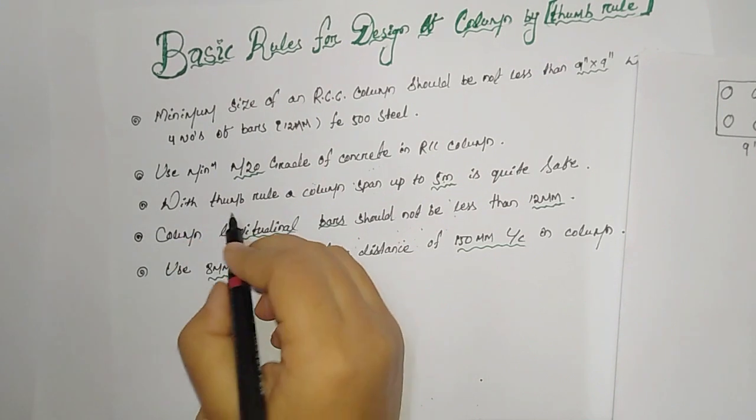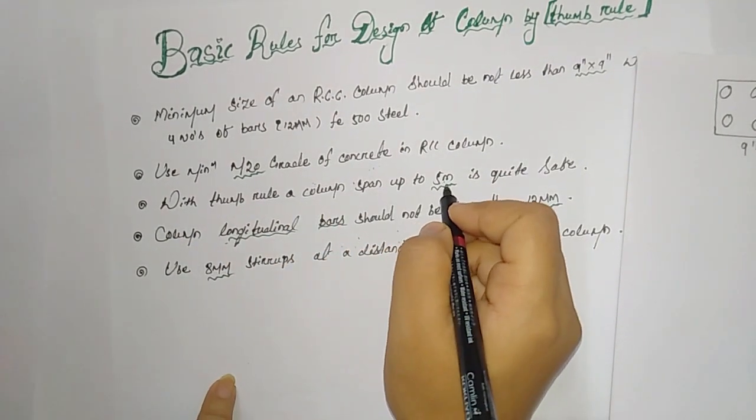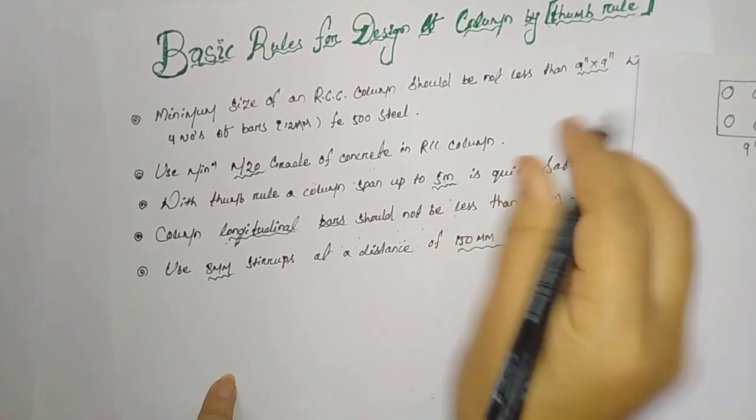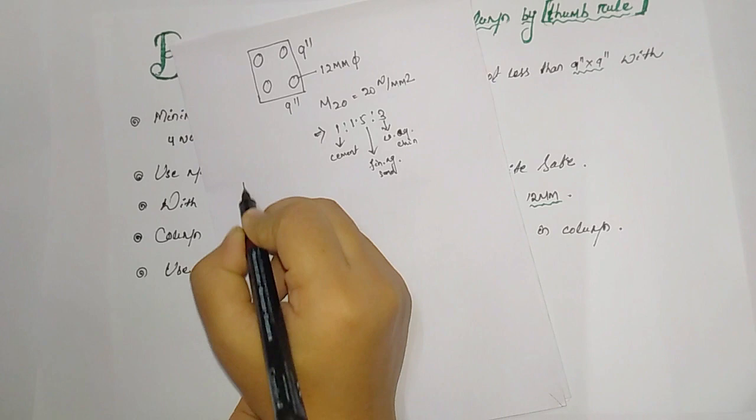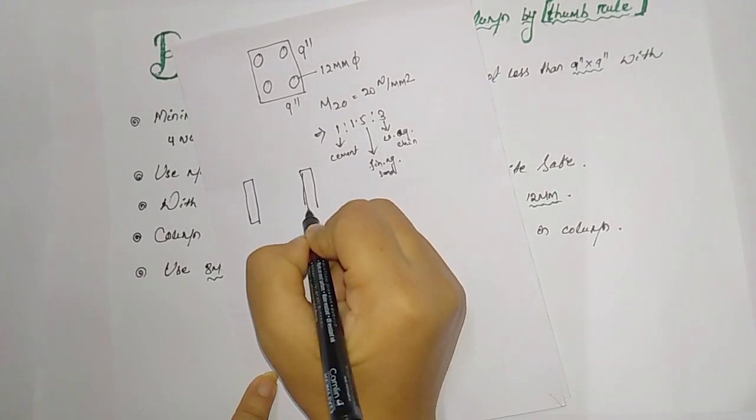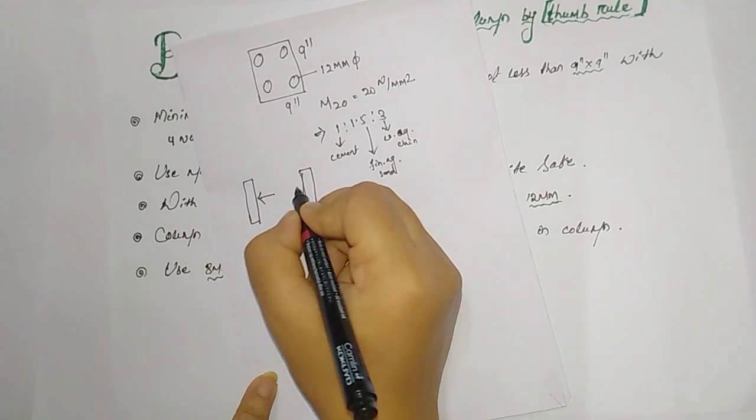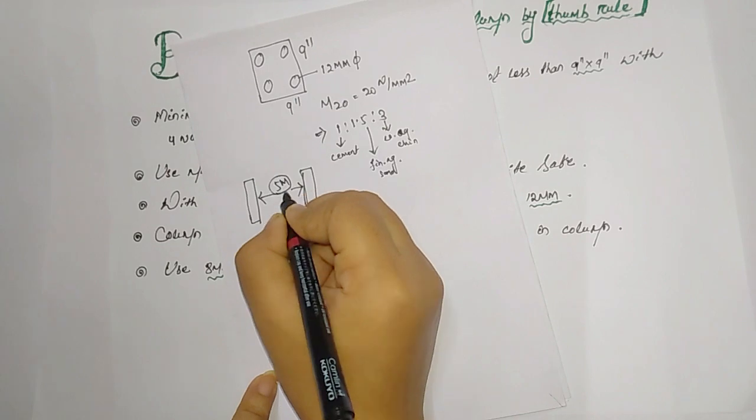Number three: with thumb rule, a column span up to 5 meter is quite safe. For example, if these are the columns, then the spacing should be 5 meter, which is safe.